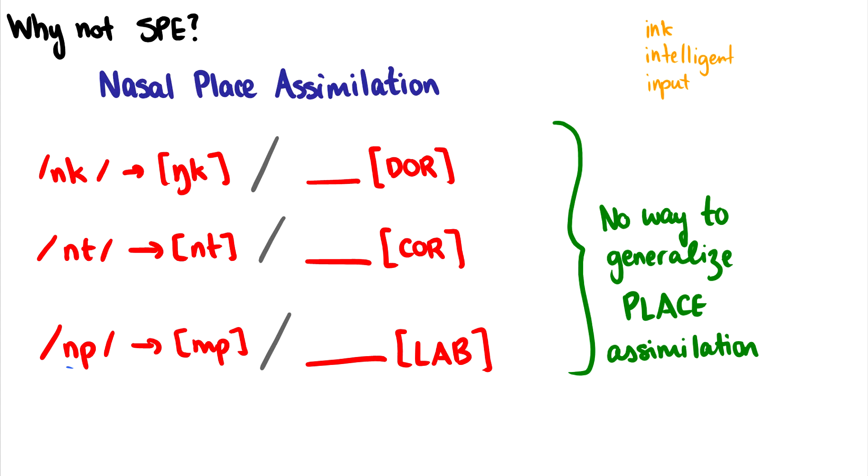Now, in SPE phonology, we need three different rules because we have these place features, these unary features, door, core, and labe, but these all have to be written as three different processes. But that doesn't make too much sense because this nasal place assimilation, it's a pretty common pattern. In fact, this is a very big process that happens in many different languages. This isn't just English. This is in tons of different languages. And it's all the same sort of assimilation. It is place assimilation. This one set of sound, this N, is assimilating to the place of the next sound. So why is this one process shown in three different rules as if it were three completely different things?